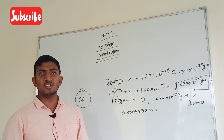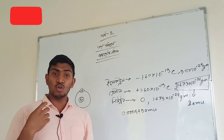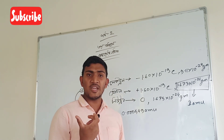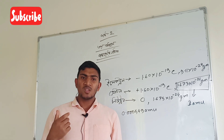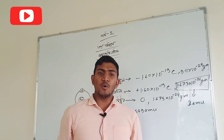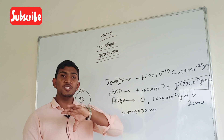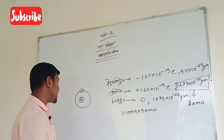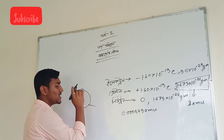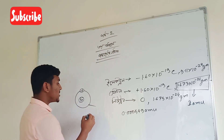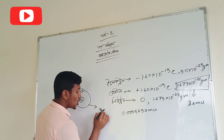We talked about the proton. But you know, what is the electron? In the past, the electron is the electron. It is the largest number of electrons. This is the electron. This is the orbit.